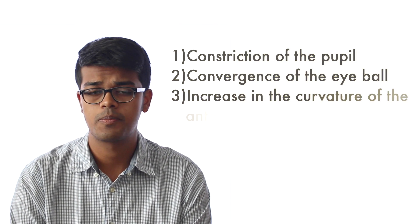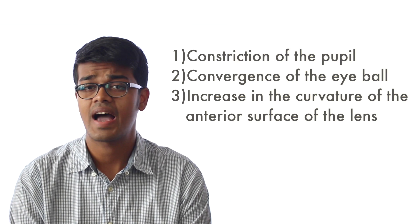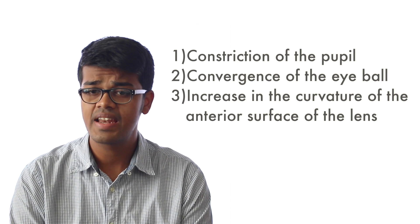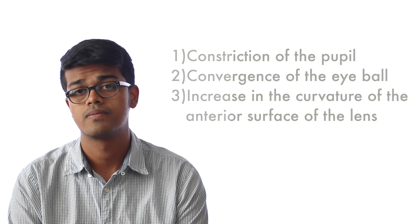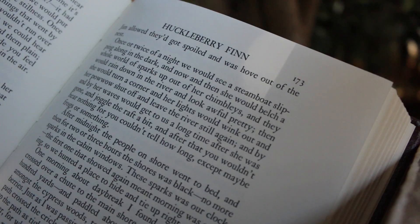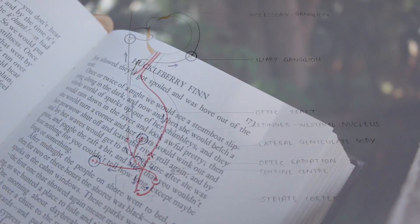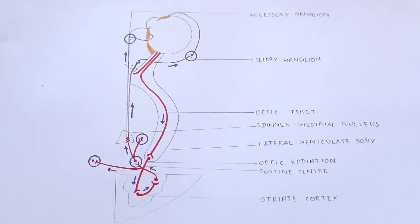Now let's talk about the accommodation reflex. The accommodation reflex consists of constriction of the pupils, convergence of the eyeballs, and increase in the curvature of the anterior surface of the lens when the eye needs to focus on a near object. Observe the change when an object is held near the camera lens. This refocusing of the lens occurs in less than one second in the eye.